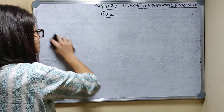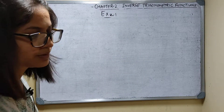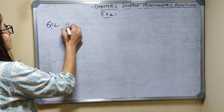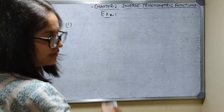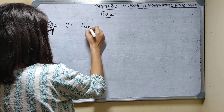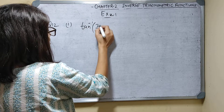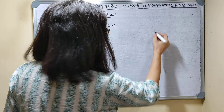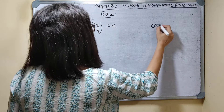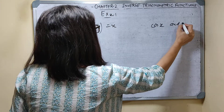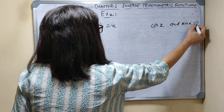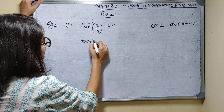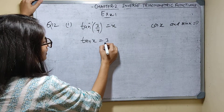Now question number 12, first part. If tan inverse 3 by 4 is equal to x, you have to find the values of cos x and sin x. So tan inverse 3 by 4 equals x means tan x is equal to 3 by 4.